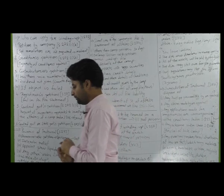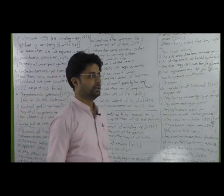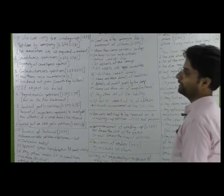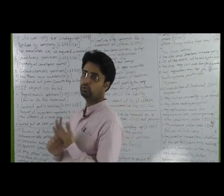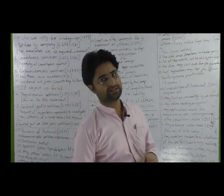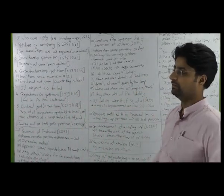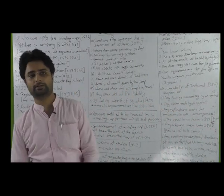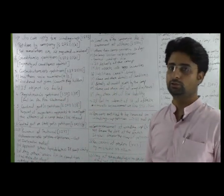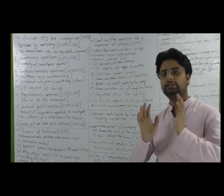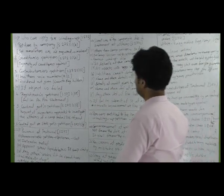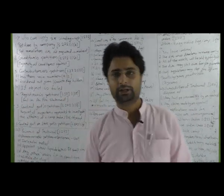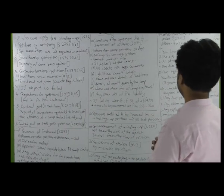Consequences of winding up order — जो Companies Act के Section 277 में बताया गया है: company law tribunal ने परिसमापन का आदेश दिया है या liquidator appoint किया है, तो ऐसी सूचना company और company registrar के पास within 7 days पहुँच जानी चाहिए। और अगर कोई परिसमापक नियुक्त किया गया है, तो उस परिसमापक के पास भी 7 दिनों के भीतर यह सूचना पहुँचनी चाहिए।